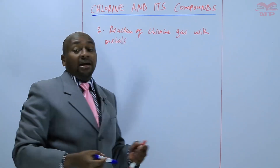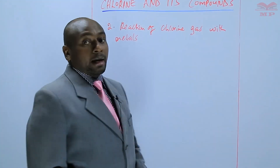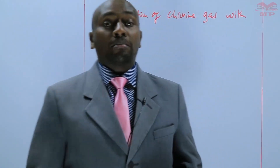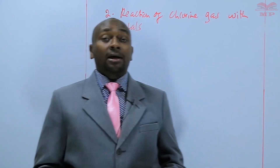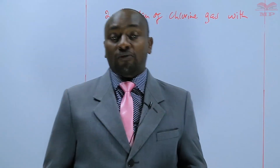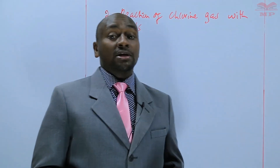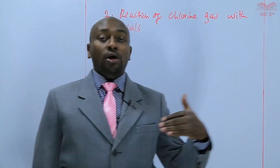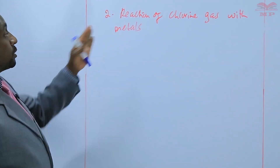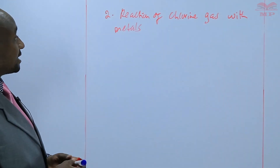Metals react with chlorine gas to form their respective metal chlorides. Metal chlorides are salts. Remember from our knowledge of form two work, chlorine is a halogen. We know that halogens are salt manufacturers. So when chlorine gas reacts with metals, we form the respective metal chlorides, which are basically salts. We are going to discuss a number of metals and see how they react with chlorine, starting with magnesium.